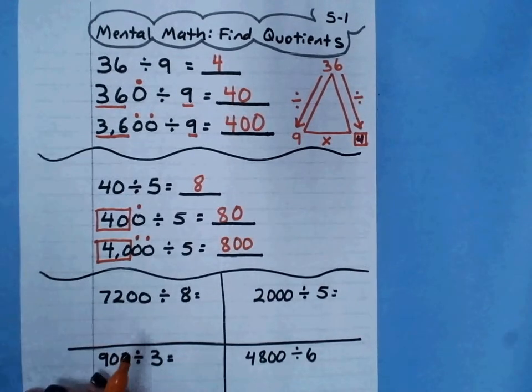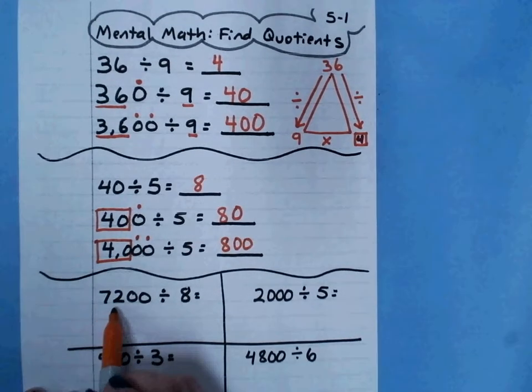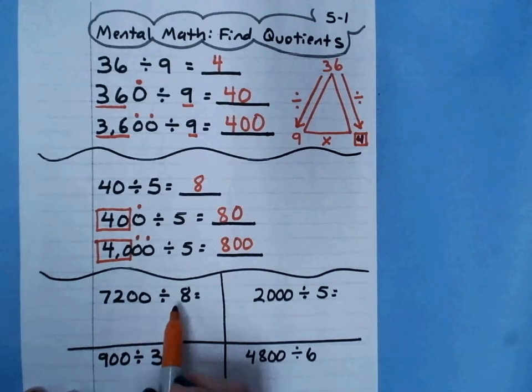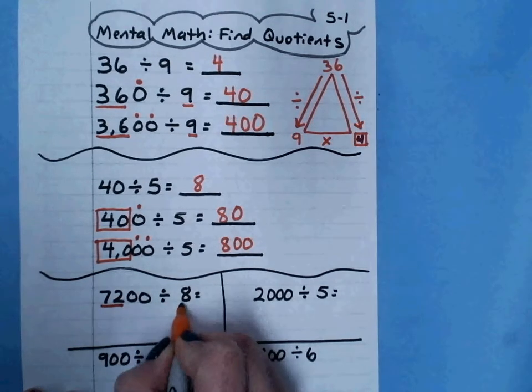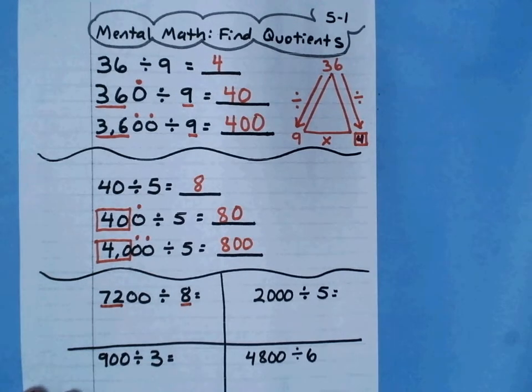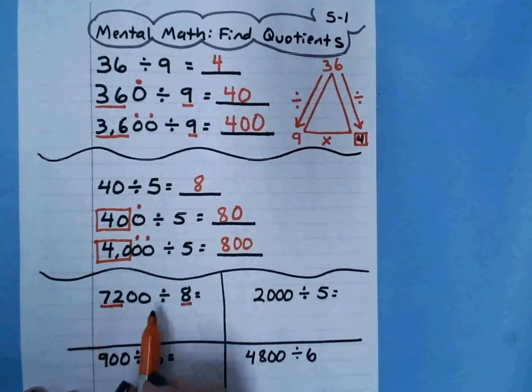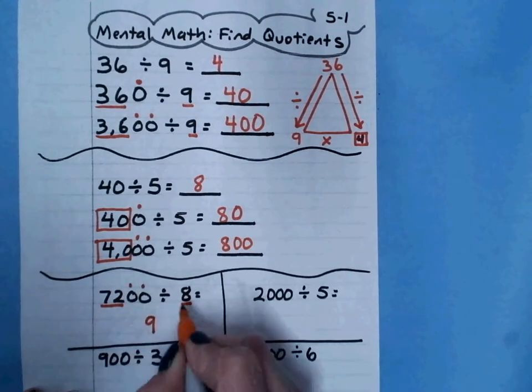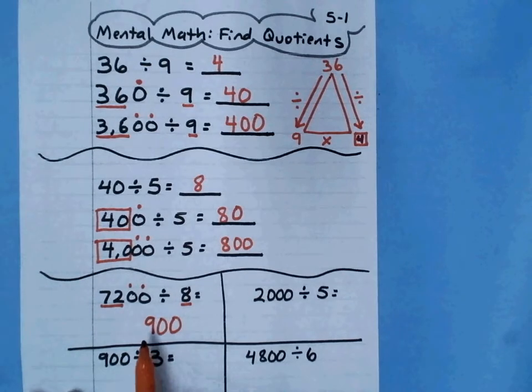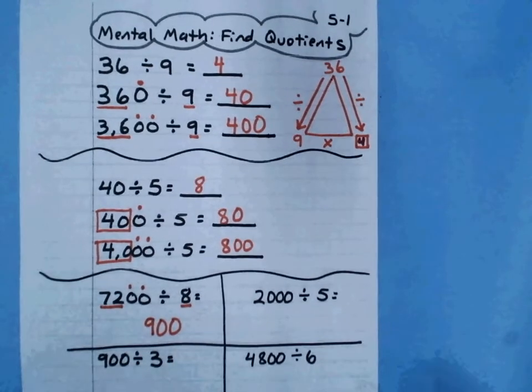Let's do two more examples. Here, I've got 7,200 divided by 8. I'm going to look at my basic fact, 72 divided by 8, or I can think about what times 8 gives me 72. 72 divided by 8 equals 9. My answer will be 9 plus 1, 2, 0s. So 7,200 divided by 8 equals 900.